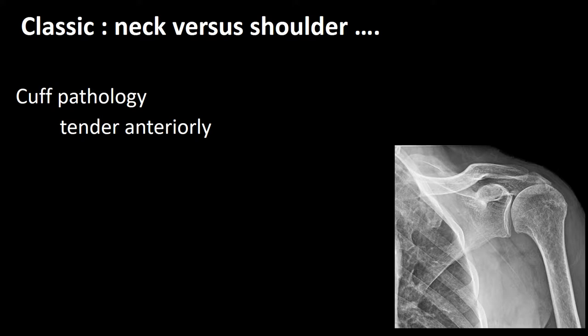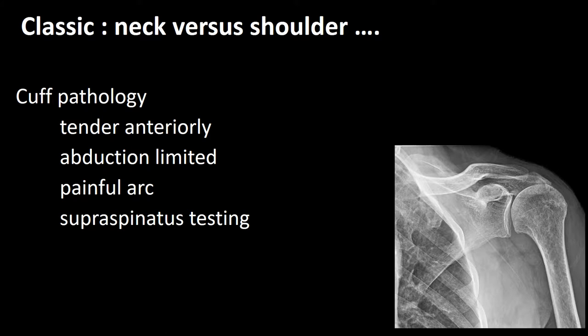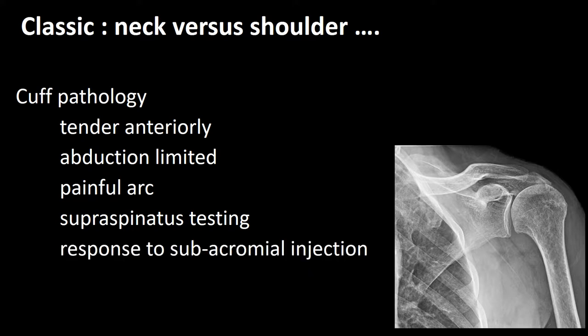Rotator cuff pathology can be confirmed by palpation with tenderness and tear in the shoulder. Abduction may be limited and the patient may well have a painful arc of elevation. On supraspinatus testing, there may be pain and/or weakness. This is simply done by asking the patient to place both hands out at 45 degrees, rotating the thumb to the floor, and elevating the arm against the examiner's resistance. Should there be pain or weakness, a supraspinatus tear may be present. This may well respond to a subacromial injection of local anaesthesia.